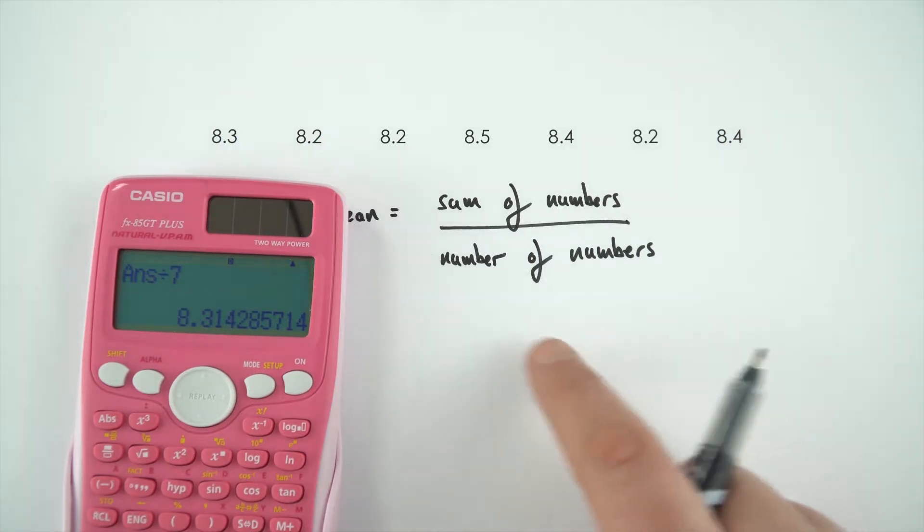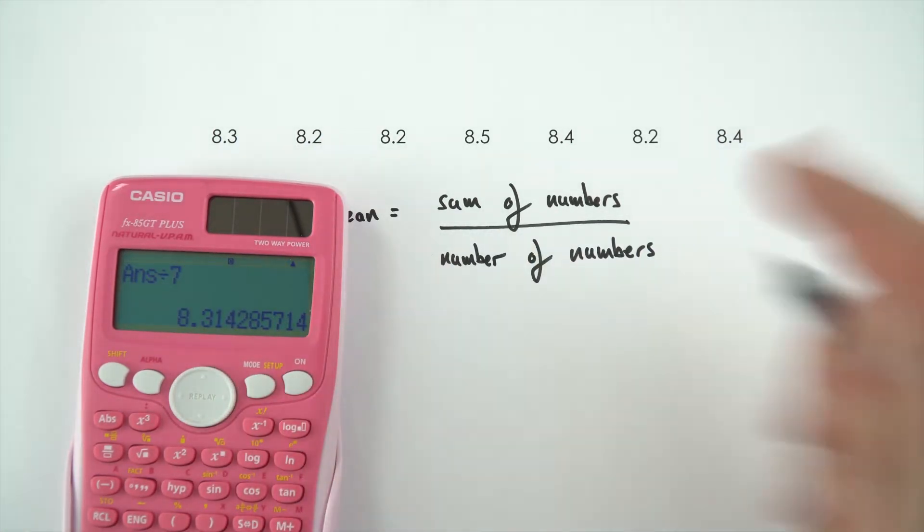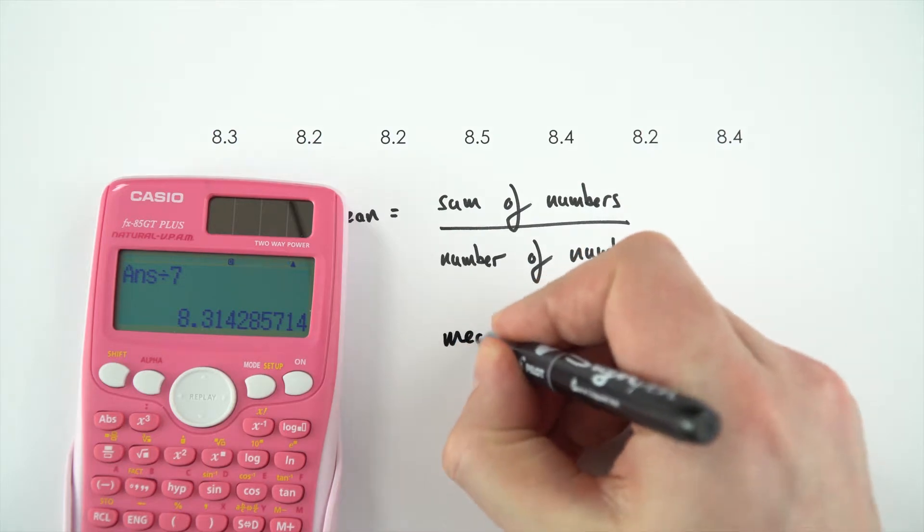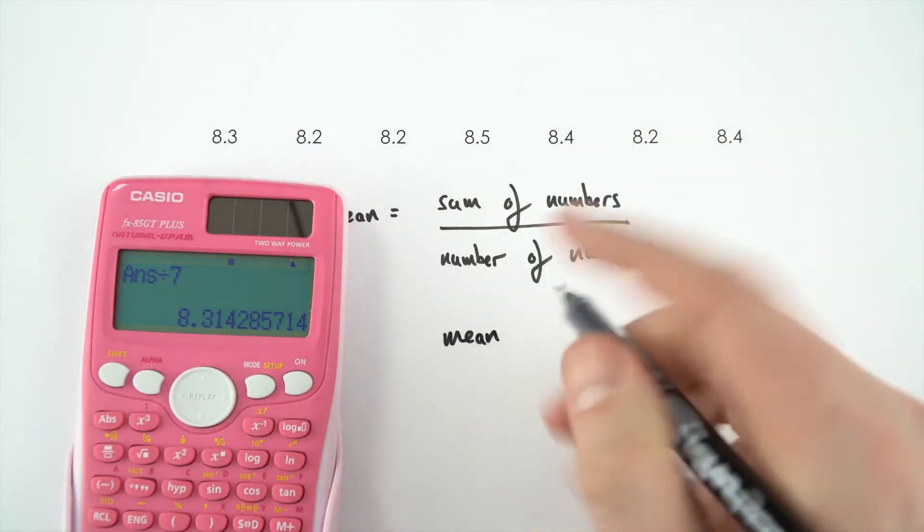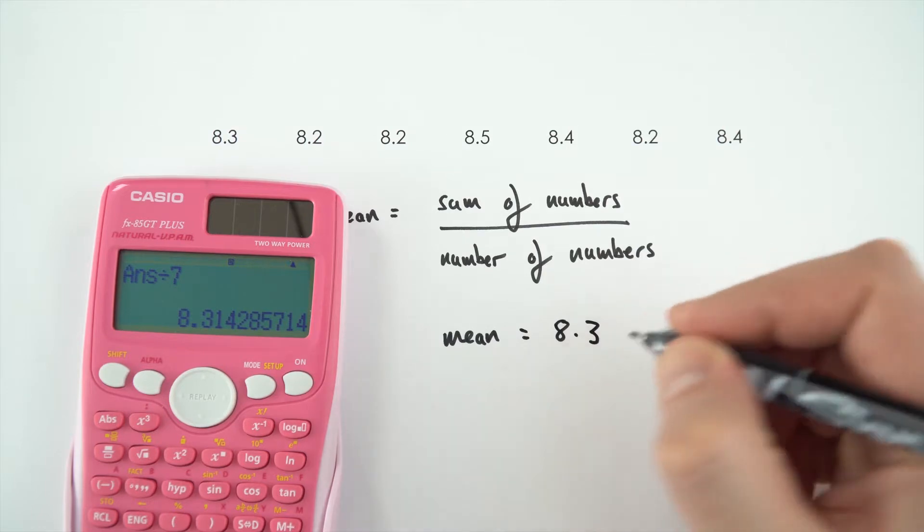And this just gives an answer of 8.314 and so on. So in that case, the mean, I'm just going to give it to two significant figures like my data here, is equal to 8.3.